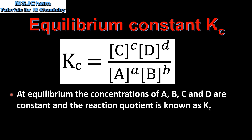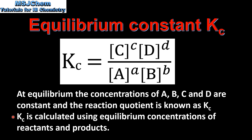At equilibrium the concentrations of A, B, C and D are constant, and the reaction quotient is known as the equilibrium constant Kc. Kc is calculated using equilibrium concentrations of reactants and products.